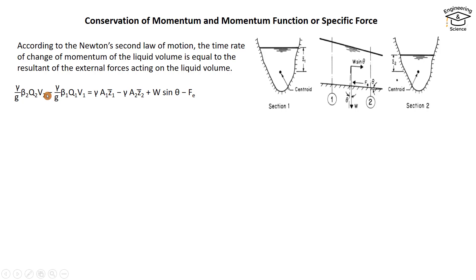The time rate of change of momentum equals the resultant of the external forces acting on the volume of liquid between sections 1 and 2. Since γ = ρg, we obtain the full equation.